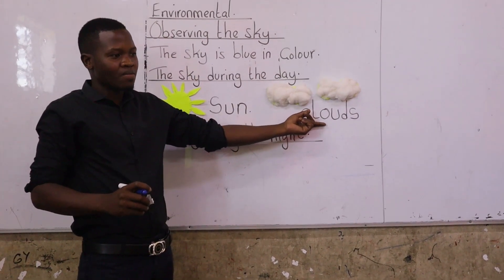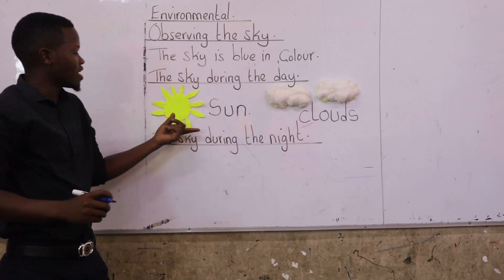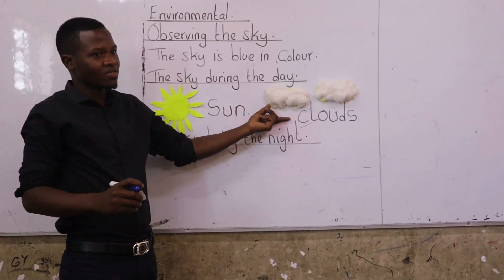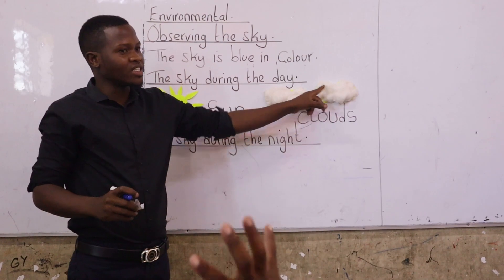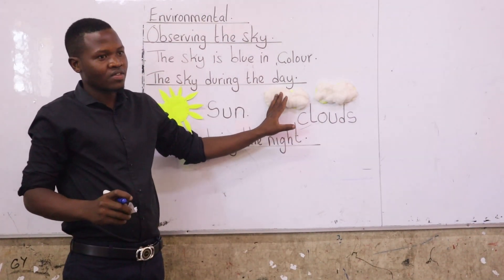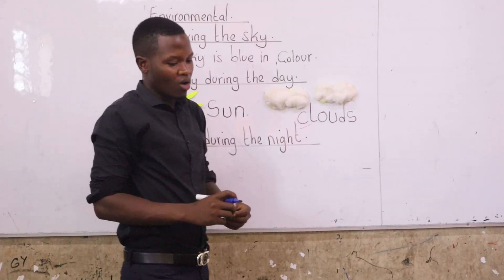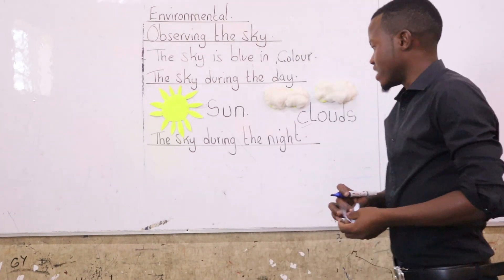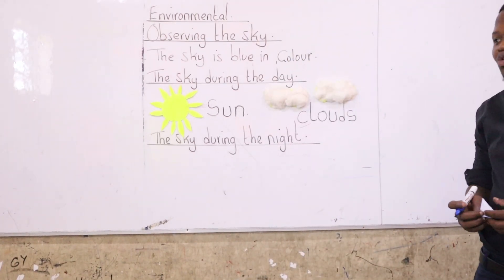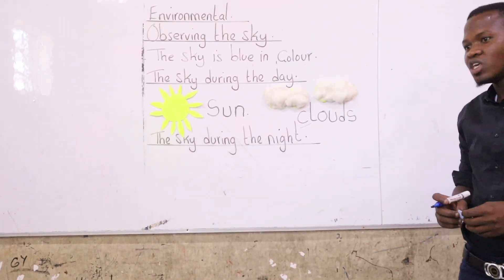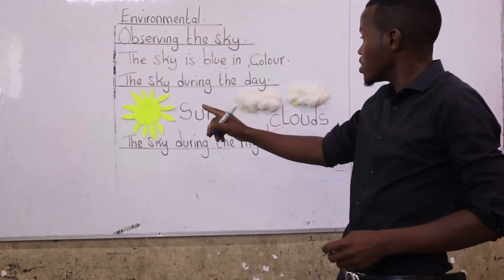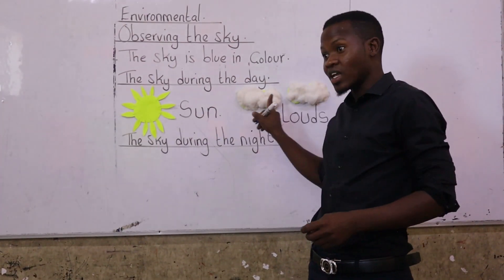Are we together? How many have ever seen the sun during the day? What about the clouds? The clouds are white in color. During the night, when you are going to sleep, before you go to sleep, if you go outside and look at the sky, you will not see the sun and the clouds.